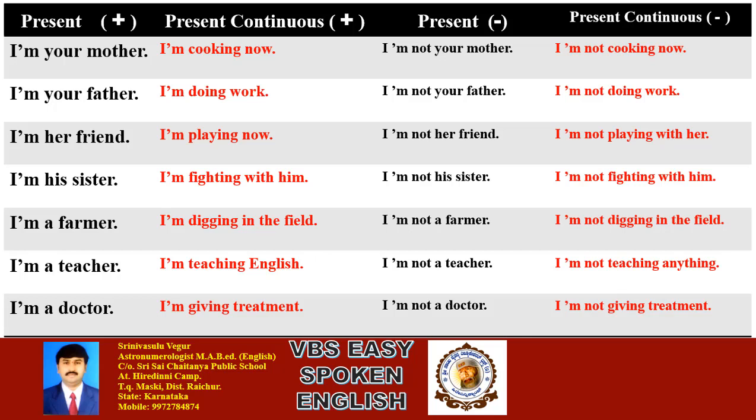More paired examples: I am his sister / I am fighting with him / I am not his sister / I am not fighting with him. I am a farmer / I am living in the field / I am not a farmer / I am not taking this field. I am a teacher / I am teaching English / I am not a teacher.